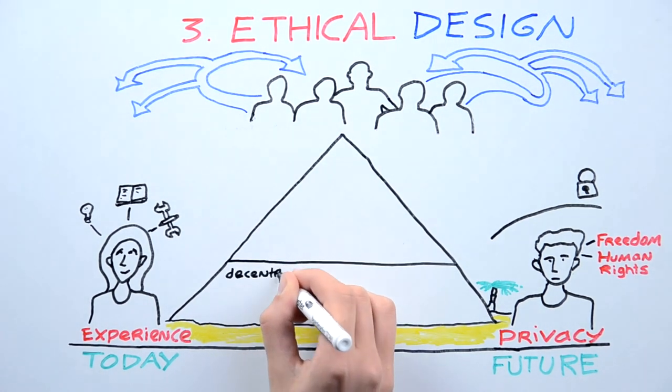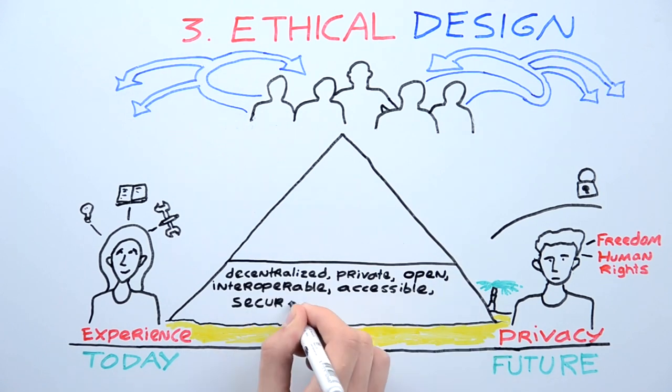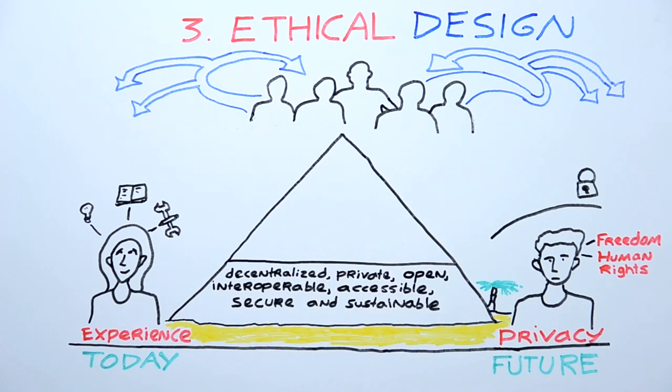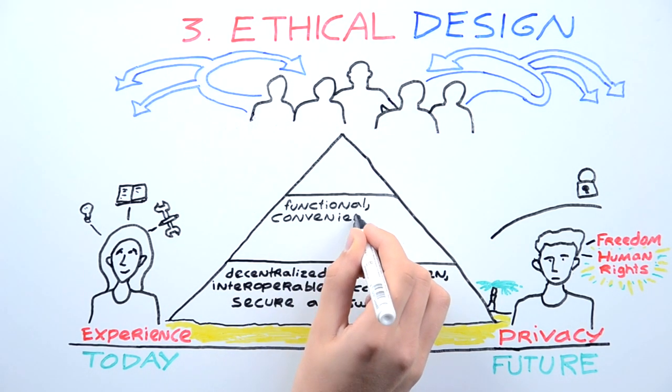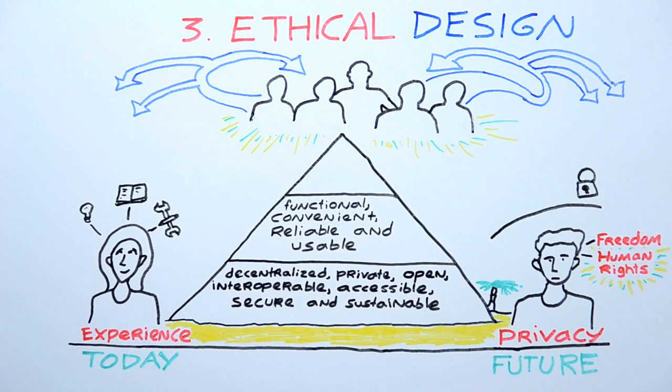We build things that are decentralized, private, open, interoperable, accessible, secure, and sustainable, because this is basic respect for human rights. We then go on and we build things that are functional and convenient and reliable and usable, because this is basic respect for human effort.